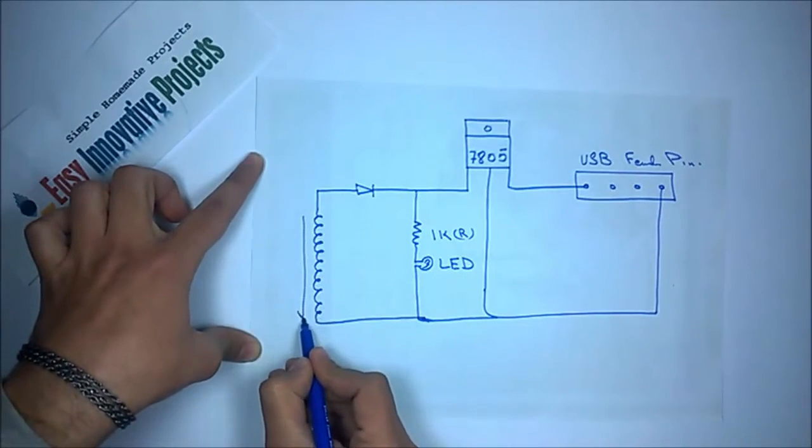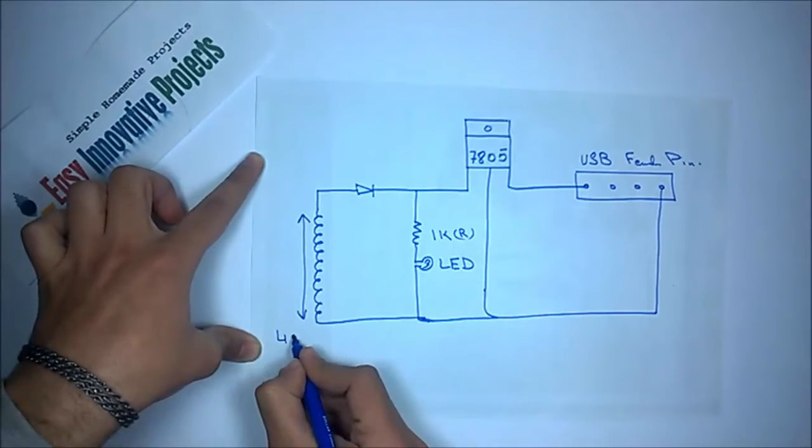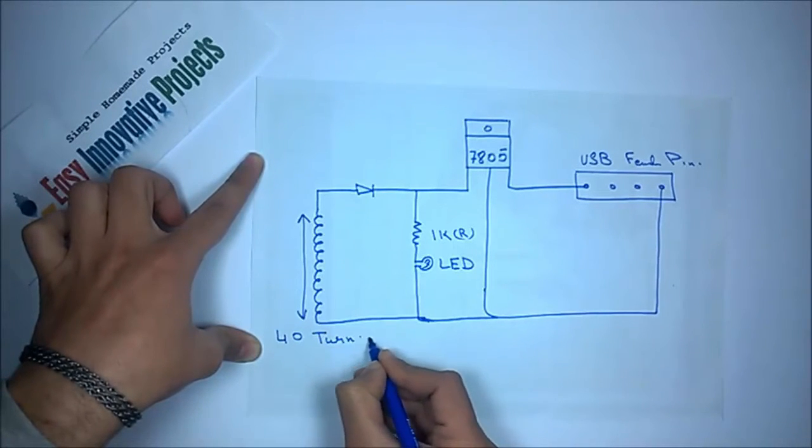Now make a secondary coil: turn copper coil 40 times on any round bottle.